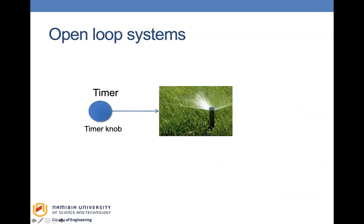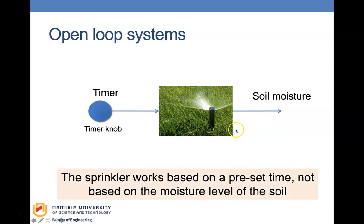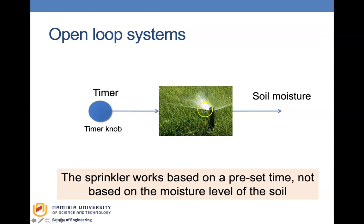A sprinkler system also works with a timer — it is set to come on at a certain time, run for a certain period, and then switch off, with the expectation that the soil will get moist. It is open loop because it is not based on the moisture around it. For example, if the sprinkler is set for 6 p.m. and it has already rained from 5 to 6 p.m., the sprinkler cannot detect the moisture and will still come on. A closed loop sprinkler would detect the moisture level and not activate.